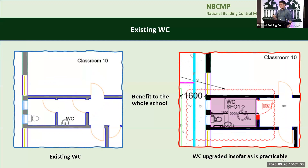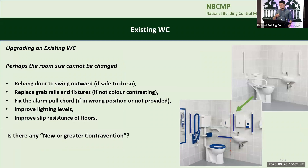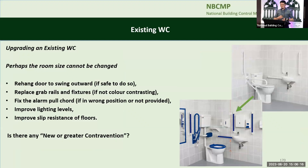When upgrading an existing WC, the first image shows very poor colour contrasting grab rails and fittings and no alarm pull cord. The second image shows colour contrasting grab rails, colour contrasting fittings and fixtures, and a proper alarm pull cord. We could rehang the door to swing outward if safe to do so, replace grab rails and fixtures if they're not colour contrasting, fix the alarm pull cord — the majority of the time it's either in the wrong position or not provided at all — improve the lighting levels and slip resistance of the floors. Have we made any new or greater contravention? No. Have we made the situation better? Yes. We can now say we have an adequate level of access and use.